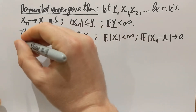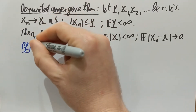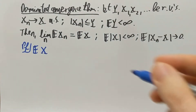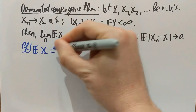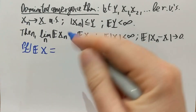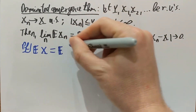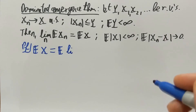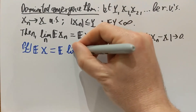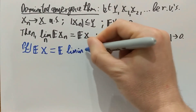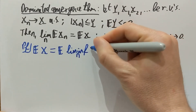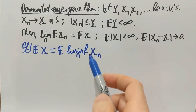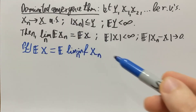Let's see the proof. I'm going to start with the expectation of X. What I know is that almost surely X is the limit of the Xn's, so I can look at the limit of the Xn's. If I have an almost sure limit of the Xn's, that limit will be equal to the limit inferior. So I always have a limit inferior, and the limit inferior is almost surely equal to the limit of the Xn's.